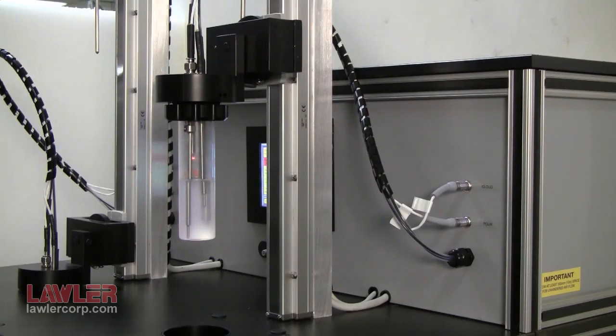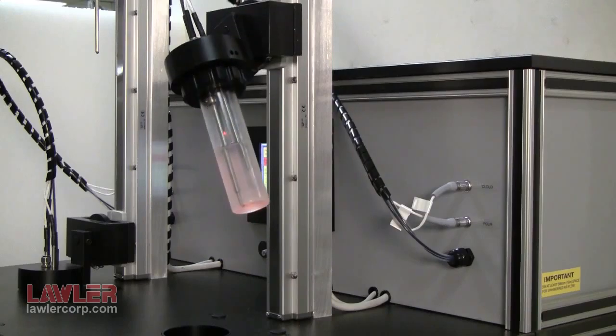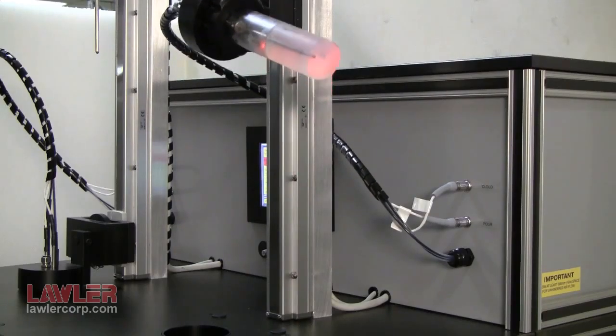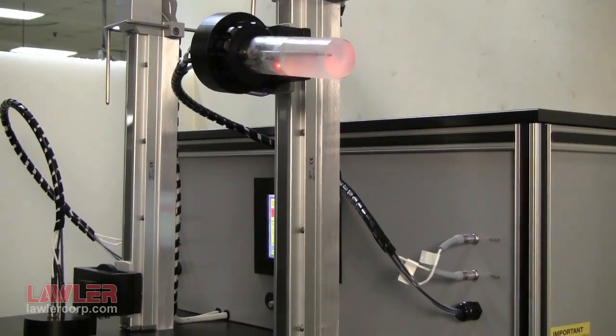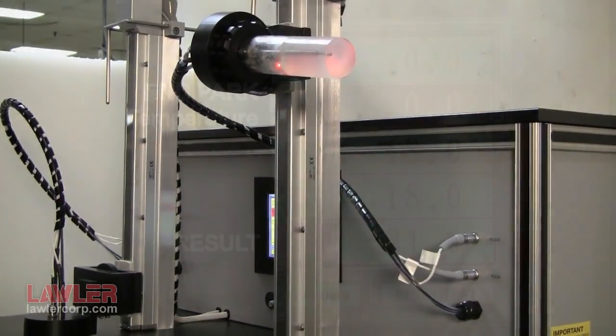This sample shows no movement, ending the test. Lawler DR4s use a non-contact sensor for pour point detection, so the sample is not touched.